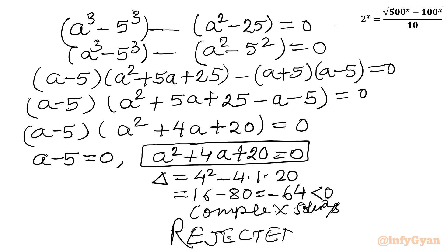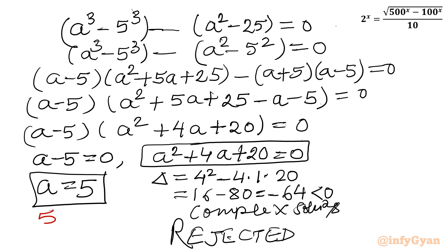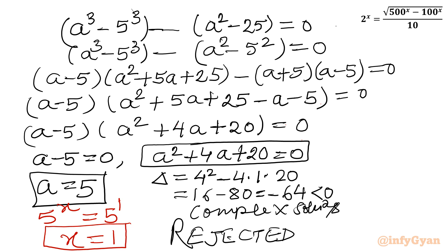The accepted solution is a = 5. Recalling our substitution, a = 5^x, so 5^x = 5 = 5^1, which gives x = 1. This is our final answer.